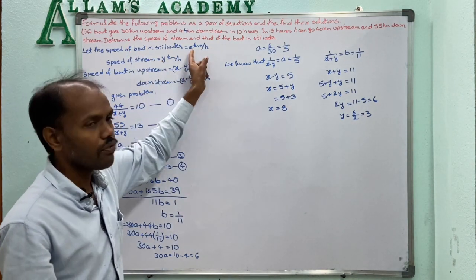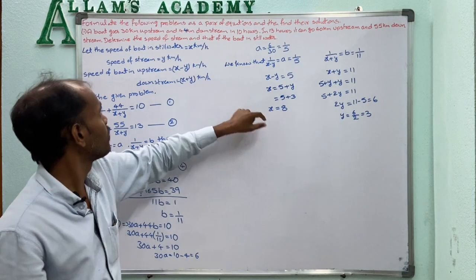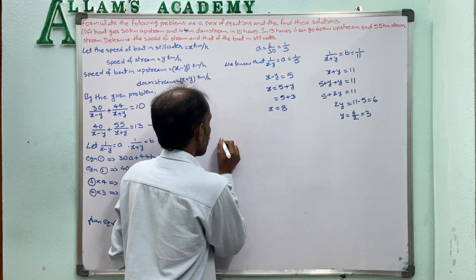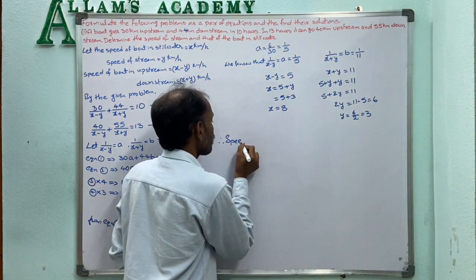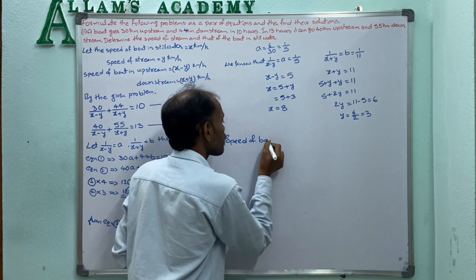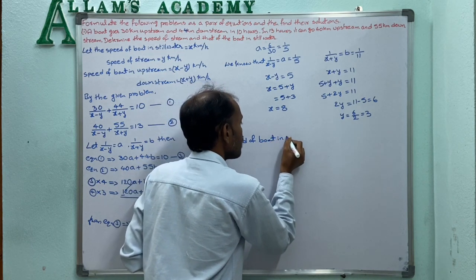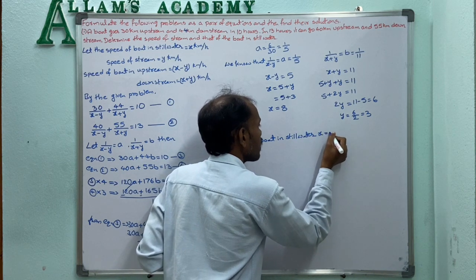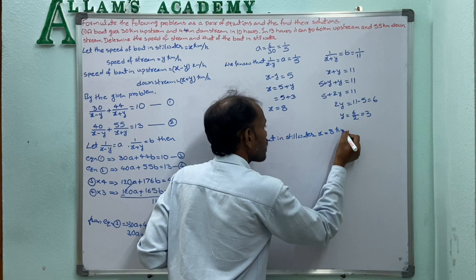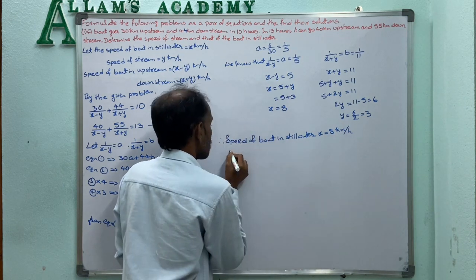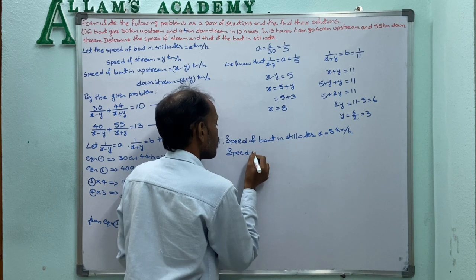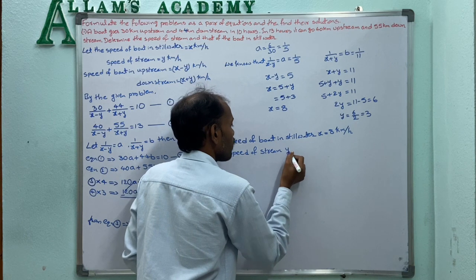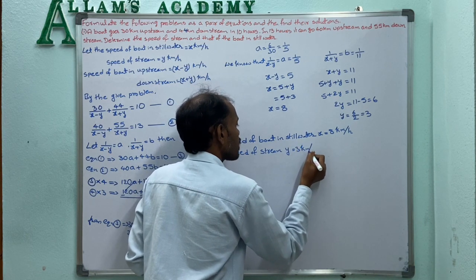Therefore, speed of boat equals X equals 8 kilometers per hour, and speed of stream equals Y equals 3 kilometers per hour.